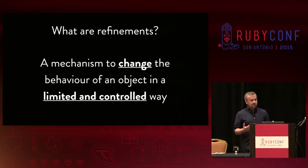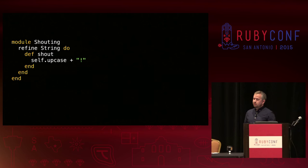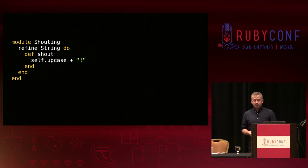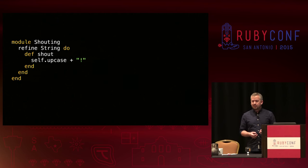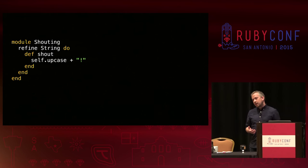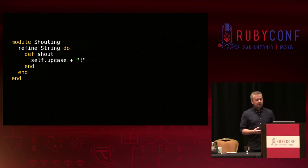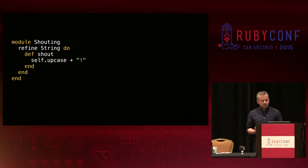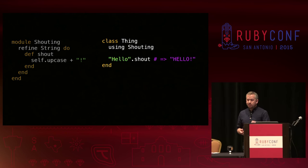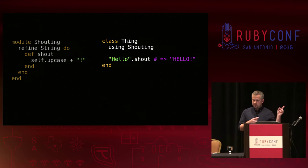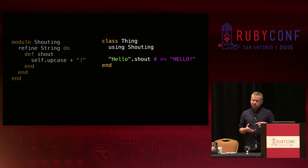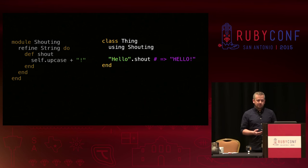Let's look at a very simple example. Refinements are defined inside a module using the refine method. This method accepts a class — string in this case — and a block which contains all the methods to add to that class when the refinement is used. You can refine as many classes as you want within a module, and you can define as many methods as you want within each block. To use a refinement, we call the using method with the name of the enclosing module. And when we do that, all instances of that class — string in this case — within the same scope as our using call will have the refined methods available.